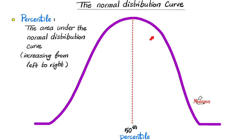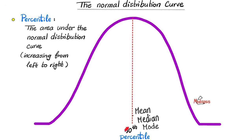This is the normal distribution curve, also known as the Gaussian curve, otherwise known as the bell-shaped curve. If this is the normal distribution curve, the middle value is the mean — it's also the median, and it's also the mode — as long as it is a normal distribution curve and not skewed to the left or to the right. In this case, mean equals median equals mode. And all of them equal the 50th percentile, meaning 50% of the scores are below and 50% are above.